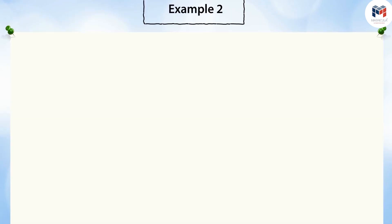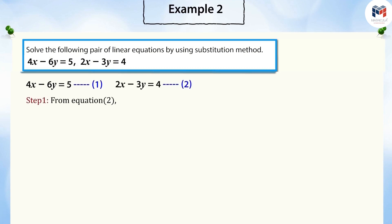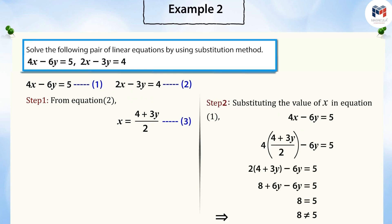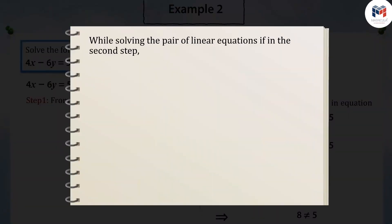Let's look at another example. Solve the following pair of linear equations by using the substitution method. First, we take equation two and write x in terms of y. Now substituting this value of x into equation one and solving, we get an incorrect equation without any variable. Can you tell me what this means?